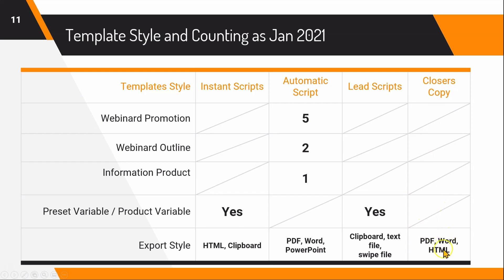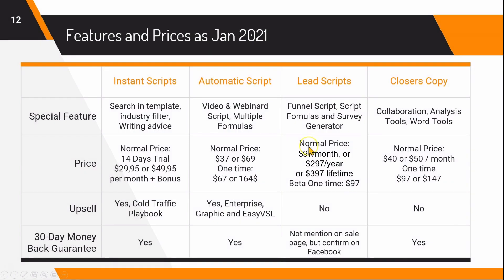Automatic Script exports to PDF, Word, and PowerPoint. Copy Closer exports to PDF and Word. PowerPoint is exclusive to Automatic Script, which is particularly useful for webinars since you get the slides for your presentation. On the special features side, Instant Script's highlights are search and template filters, content industry filters, and writing advice. Automatic Script's special features include video scripts, webinar scripts, and multiple long-form sales letter formulas.